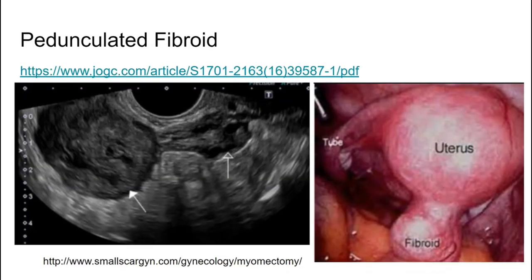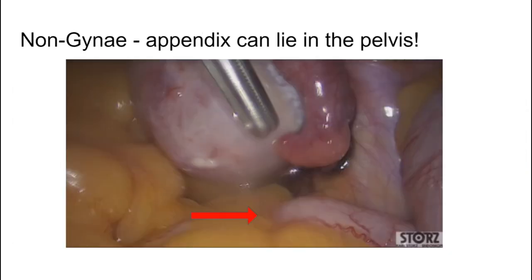Two other things worth noting: pedunculated fibroids are not technically adnexal pathology but appear near the tube and ovary on scan, and are good mimics of other conditions — we've had cases mistaken for ectopic pregnancies. Also remember the pelvic appendix — the cecum and appendix can sit right next to the ovary and tube, so masses that look like a tubal abscess could actually be the appendix. Management in that case: refer to surgeons.